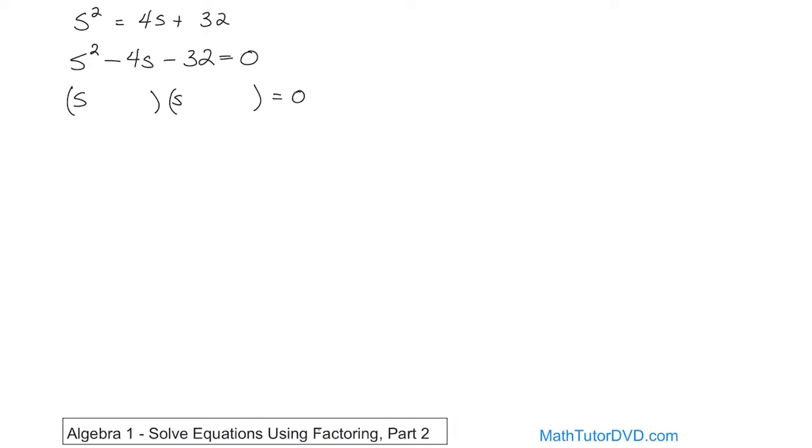Then we have 32, so we need to think of things that multiply to give us 32. You could do 16 times 2 - that's not really going to work. 8 times 4 is 32. Let's try that. The reason is because you're going for 8 times 4, and you also want an interior term which is going to be a negative 4. We're going to need to choose our signs as follows. This is going to be a negative 8, and this is going to be a positive 4. You need different signs, because negative 8 times 4 is negative 32, but then the interior term will be negative 8s. This will be positive 4s. You add those, you're going to get the negative 4s.